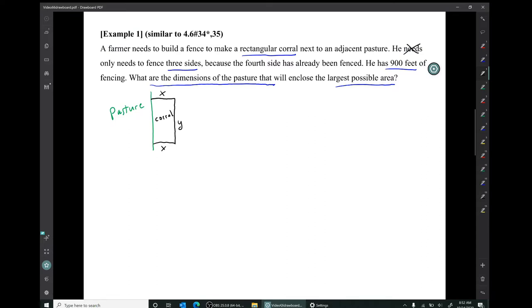Now then, we have letters. We can start to translate more of this given information. So the fact the farmer has 900 feet of fencing, that means the length of fence that he has is 900 feet. So let's make an equation that conveys that. So we have equation one that says 2x + y = 900.